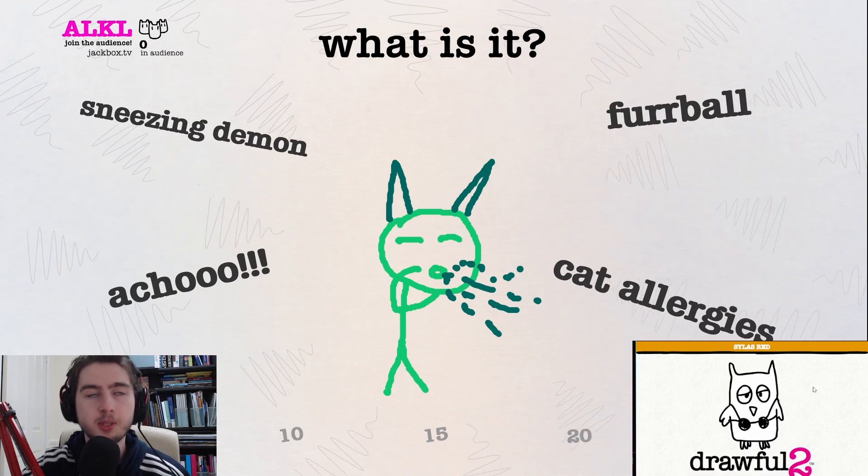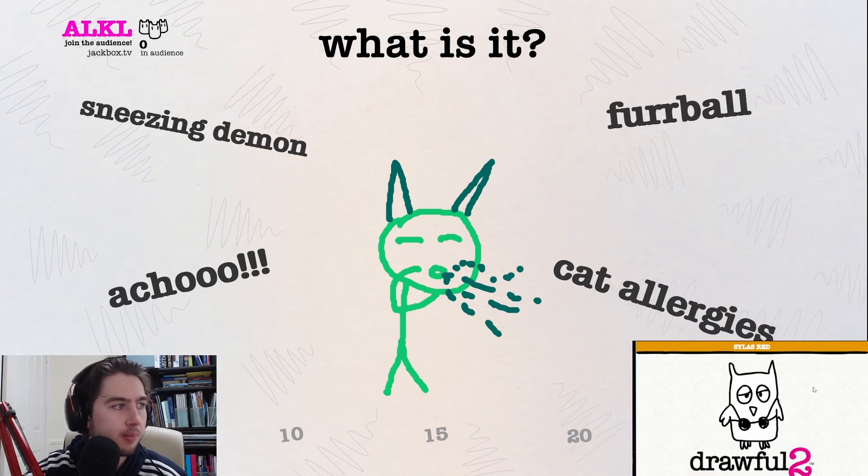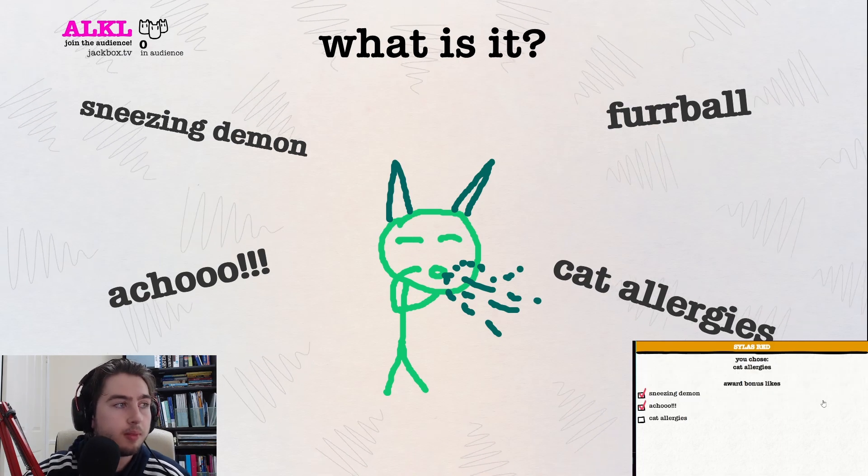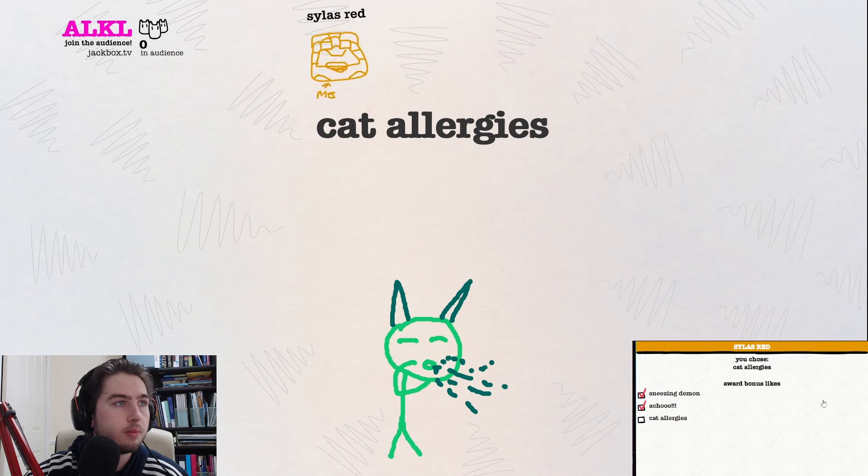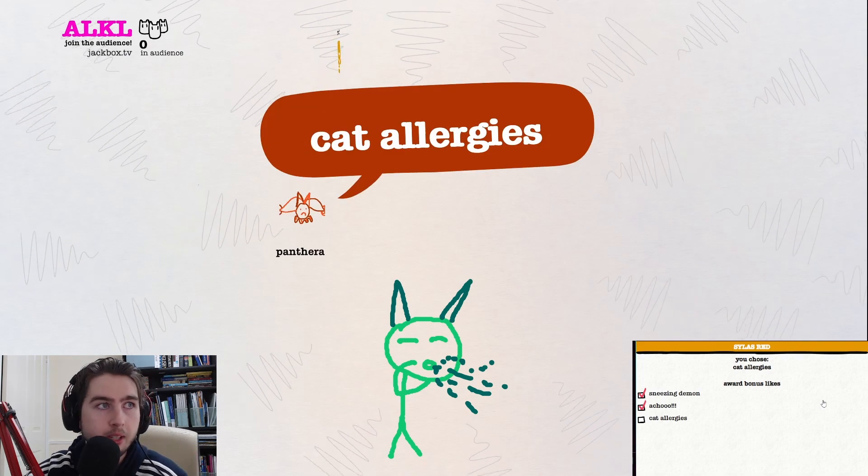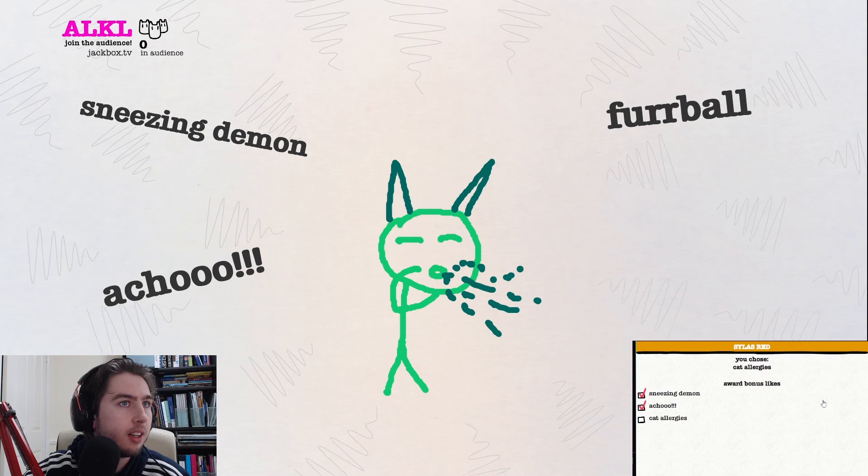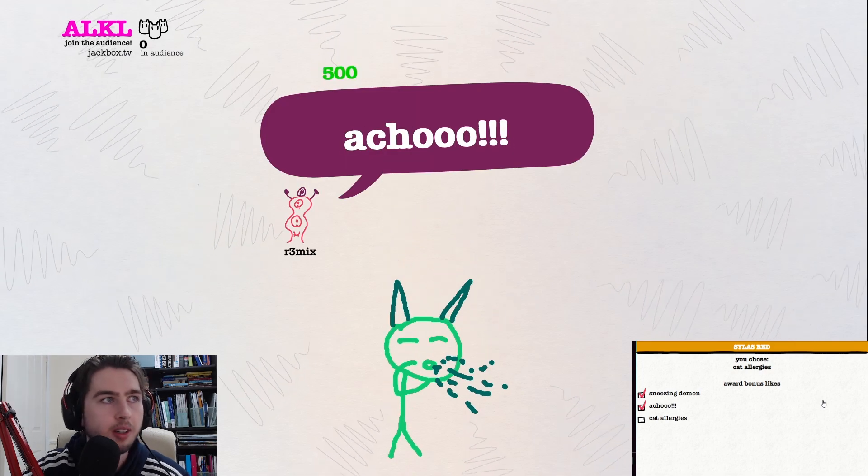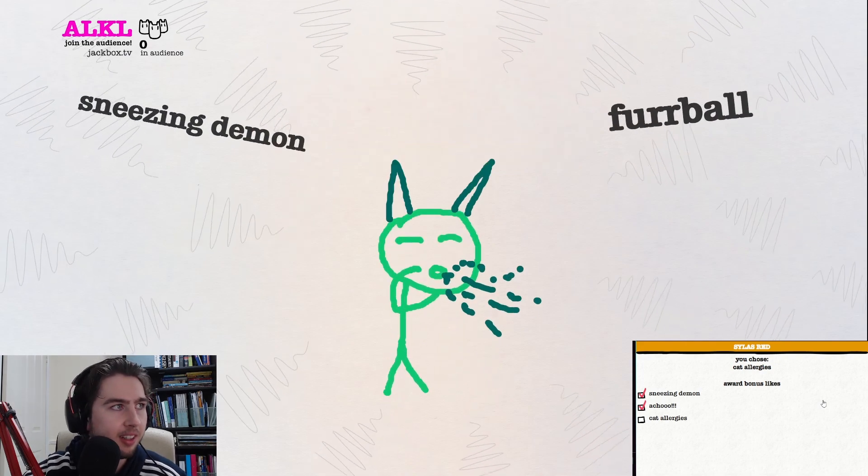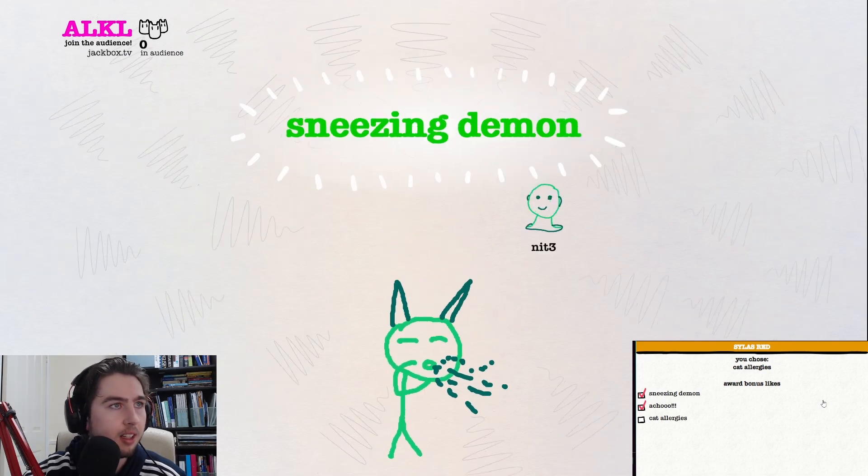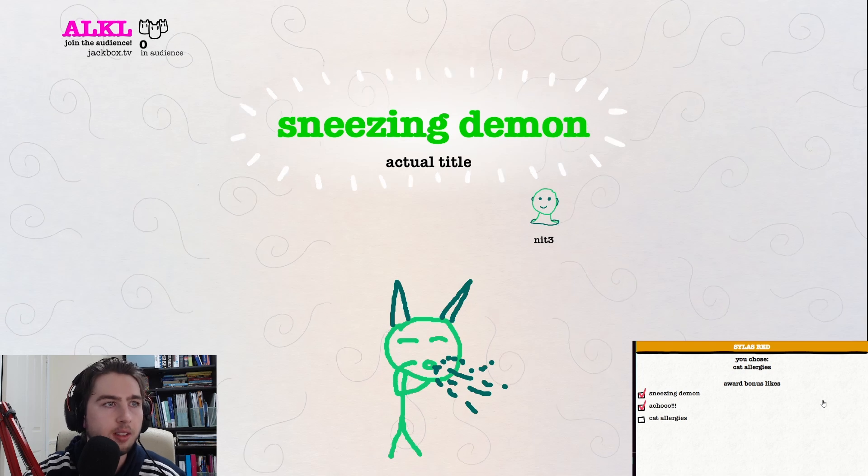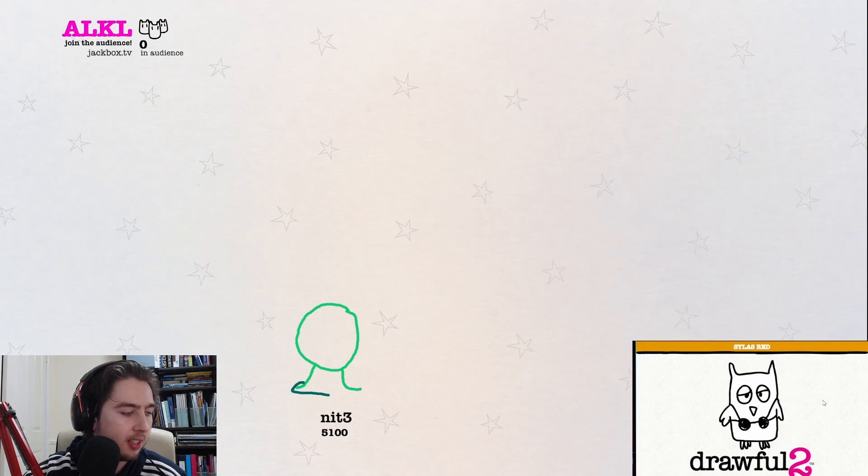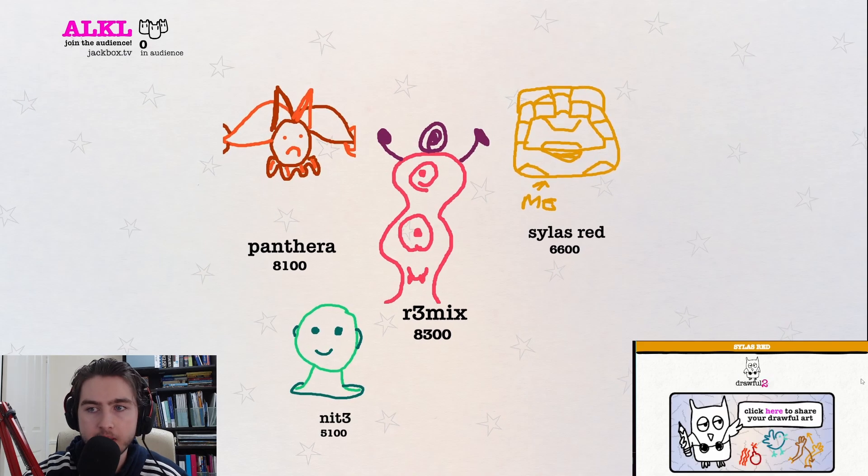But as they say, Slow and steady wins the race. Where are your choices? Sneezing demon. It's gotta be sneezing demon. Surely. And here are your picks. Here are our picks. This is rigged. This game is rigged. You're the host. What do you mean it's rigged? Hello. Hello. There we go. Sneezing demon. Awww. Wah wah.